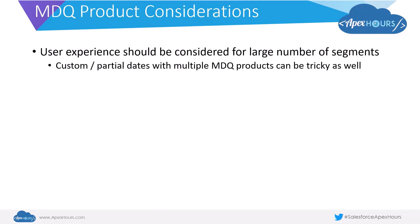From a user experience perspective, we need to think carefully about how we set up MDQ products. If price dimensions are set at a monthly level, you could end up with a large number of segments. Also, if you have custom or partial dates with multiple MDQ products, the user experience can be clunky — both from a quote line editor perspective and from a quote document perspective. Keep this in mind when configuring, and consider how a sales rep will actually use these during quoting.